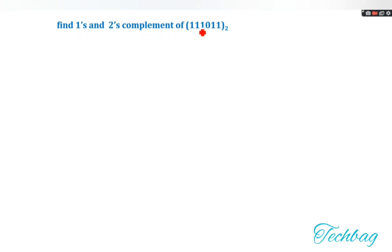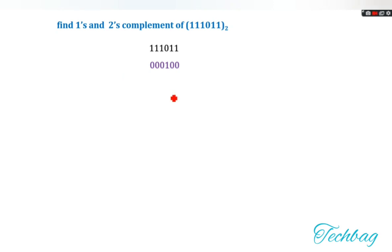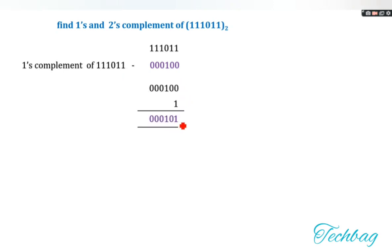Next question: find the 1's and 2's complement of 111011. To get 1's complement, invert each digit: 000100. To get 2's complement, add 1 to the 1's complement: 000100 plus 1 equals 000101. So 000101 is the 2's complement of 111011. I hope you all understand 1's complement and 2's complement. Thank you for watching.